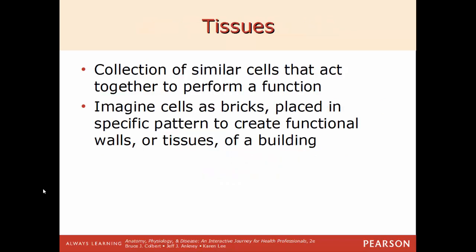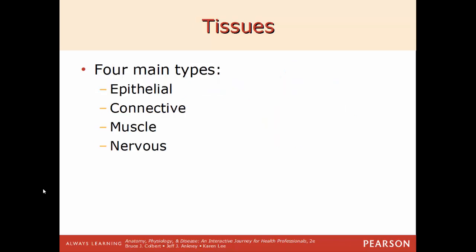We'll start with tissues. It's a collection of similar cells that have similar functions. Imagine cells as bricks placed in a particular pattern to create a functional wall of a building — the same setup for cells and tissues. These cells are the basic building components of that organ. All tissues in the body fall into one of four categories: epithelial, connective, muscle, and nervous.